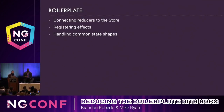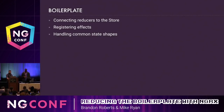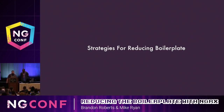Actual boilerplate is things like connecting the reducers to the store, also registering the effects — whether you're doing this at the root or registering the effects lazily, you're still doing the same thing over and over. So what are some strategies for reducing all of this boilerplate in an NGRX application?